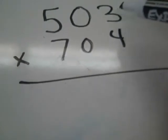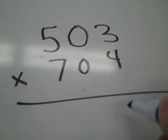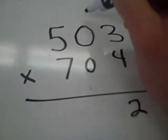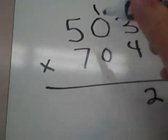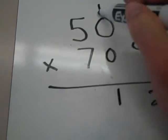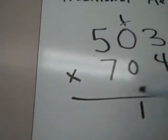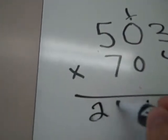First thing I'm going to do is 4 times 3. I know that's 12. So I'll put my 2 here and I'll carry my 1. 4 times 0 is 0. But I got that 1 there. 4 times 5 is 20. I can write that out.